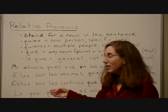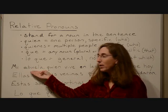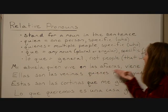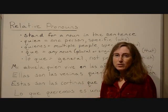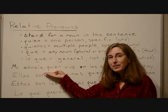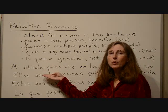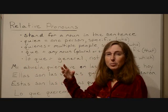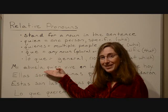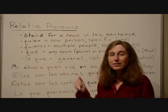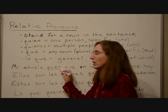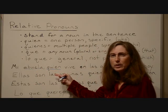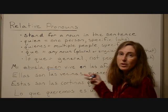Here's an example. Mi abuela — my grandmother — quien vive en las afueras, who lives in the outskirts, viene hoy, is coming today. In this sentence, our relative pronoun is quien, and it's referring to or standing for the noun abuela. Abuela is still in the sentence; it doesn't replace the noun, but it's as if that noun was being used a second time, and we use the relative pronoun instead. So quien is standing for abuela, and we translate it as 'who': my grandmother, who lives in the outskirts.